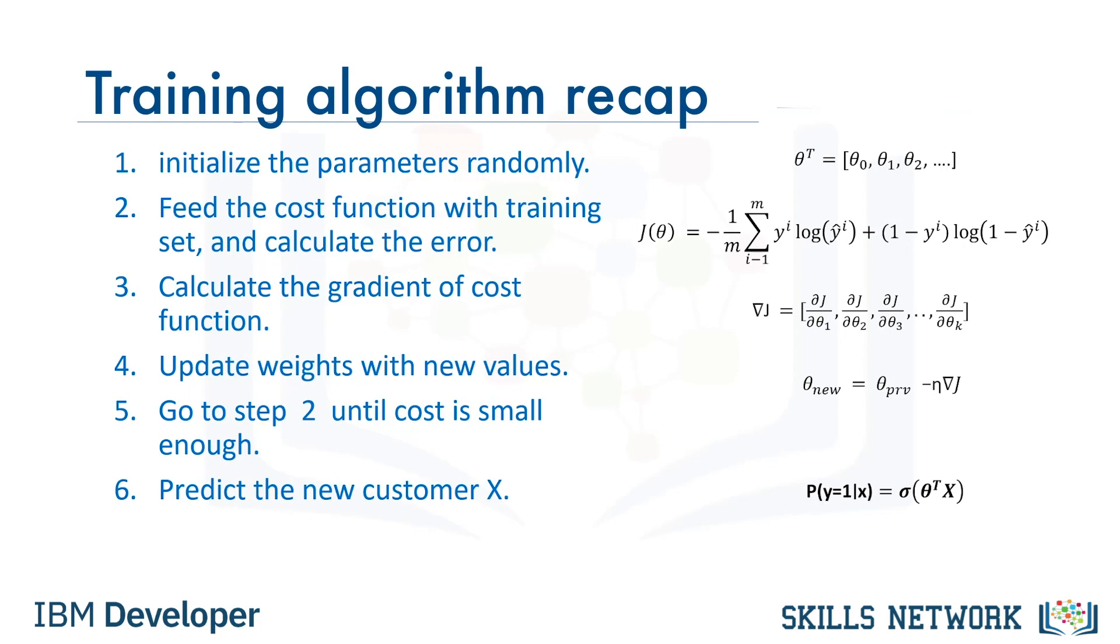Step 6. The parameter should be roughly found after some iterations. This means the model is ready, and we can use it to predict the probability of a customer staying or leaving.